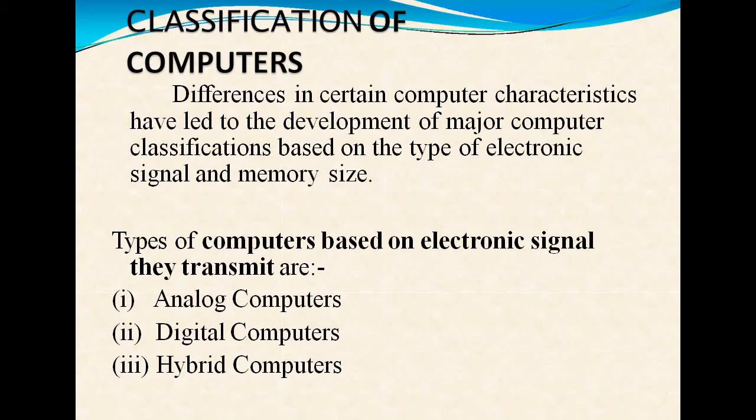What is the classification of computer? Classification of computer is based on three types: analog, digital, and hybrid. Differences in certain computer characteristics have led to the development of major computer classifications based on the type of electronic signals and memory size.